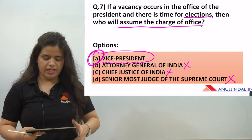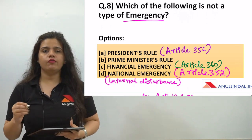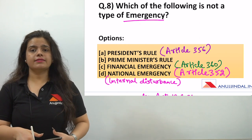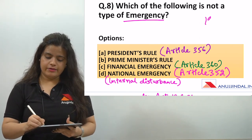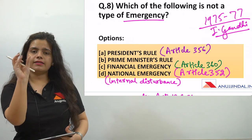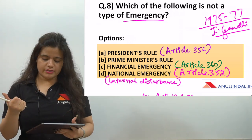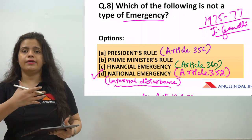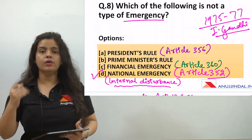The next question asks: which of the following is not a type of emergency? In India, there was an emergency from 1975 to 1977 — that was a national emergency due to internal disturbance, declared under Indira Gandhi. The question asks which of the four options is not a type of emergency. The first type is Article 352, which is national emergency due to internal disturbance. This was in force from 1975 to 1977.